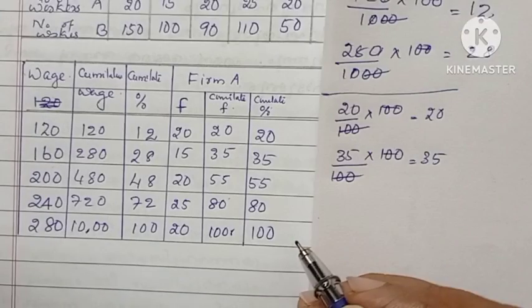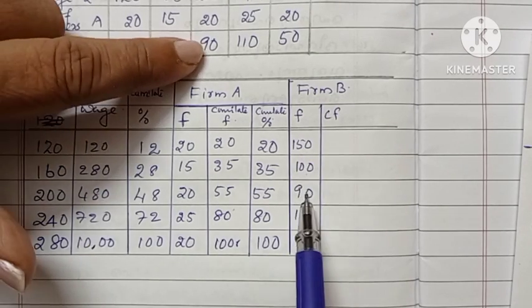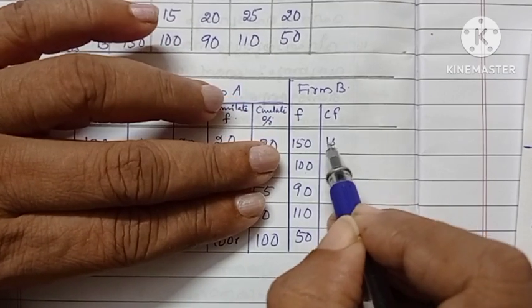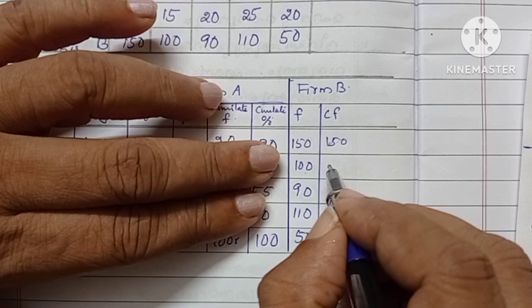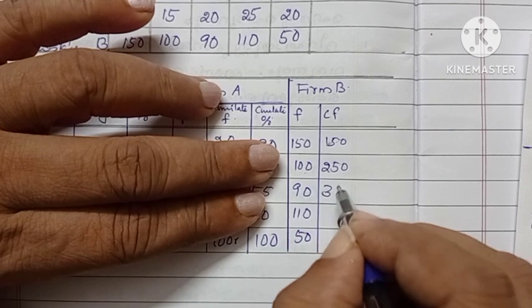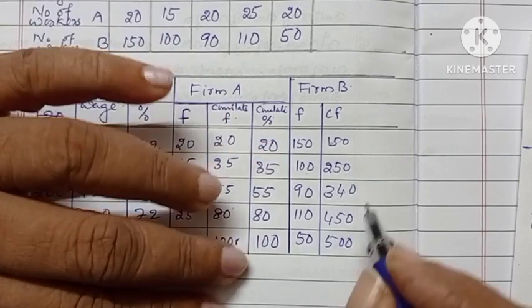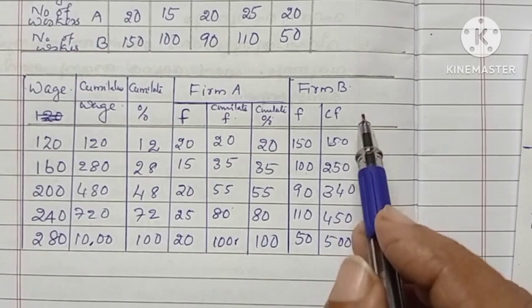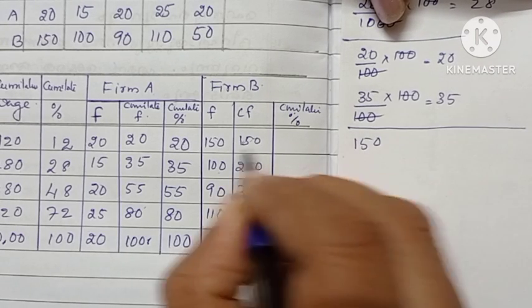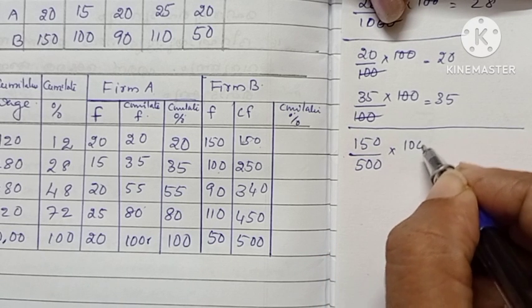After that we can go to firm B. The frequencies are given. After that we are finding the cumulative frequency by adding each value: 150, 150 plus 100 is 250, 250 plus 90 is 340. Adding all together we will get 500. The next one is we have to find the cumulative percentage — that is 150 divided by total, which is 500, into percentage.